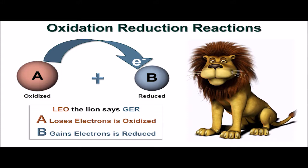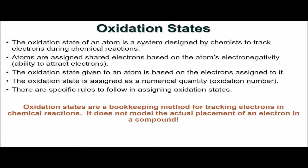To keep track of electrons in a redox reaction, we need to assign oxidation states to the atoms in the reaction. Atoms in a molecule are assigned shared electrons based on the atom's electronegativity. The oxidation state is based on the number of electrons that have been assigned to an atom. The oxidation state is a numerical quantity, and there are specific rules to follow in assigning oxidation states. It is important to remember that oxidation states are simply a bookkeeping method for tracking electrons in chemical reactions. Oxidation states do not model the actual placement of an electron in a compound.